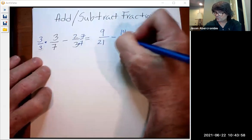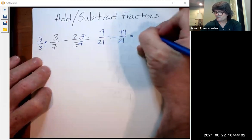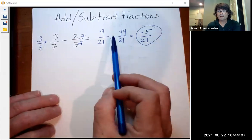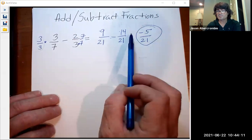And then we're going to have minus two times seven, 14 over 21. And then nine minus seven is negative five over 21. Don't forget that when you subtract or add fractions, the bottoms do not add or subtract, only the tops.